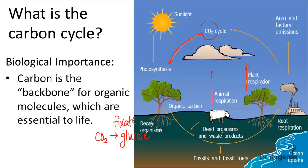A lot of carbon also comes from the decomposition of dead organisms and waste products. If you remember, a lot of biological molecules have a heavy carbon content. So when plants or animals die, or produce waste, the carbon content in their biological molecules is broken down and deposited into the soil. This creates the second part of the carbon cycle.